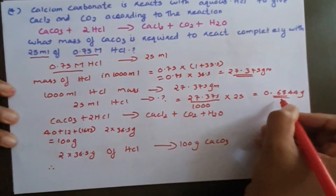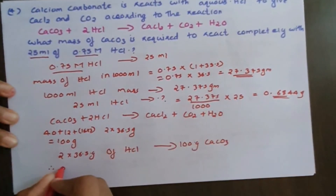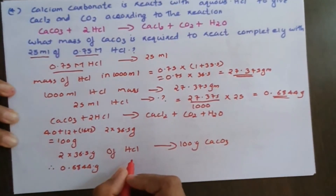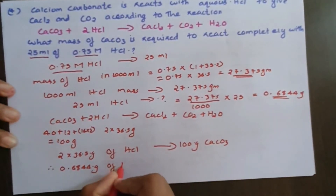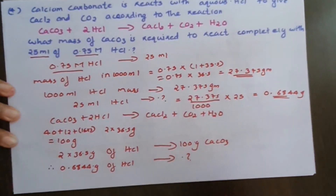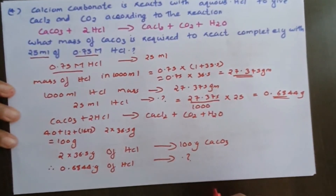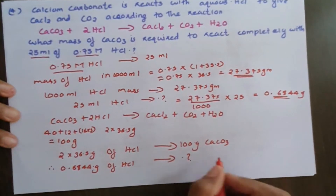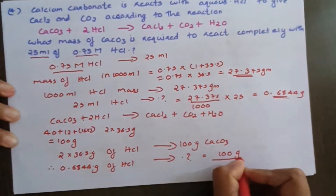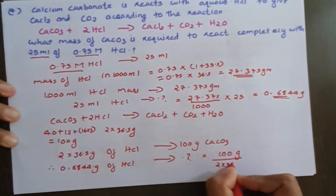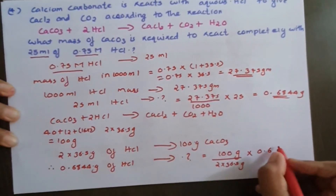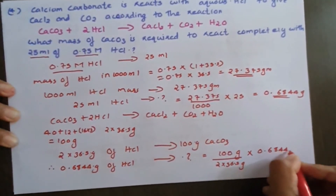We have 0.6844 g of HCl — how many grams of calcium carbonate does that correspond to? That is equal to 100 grams divided by 2 × 36.5 grams, multiplied by 0.6844 grams.